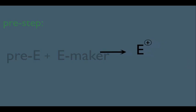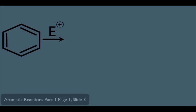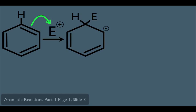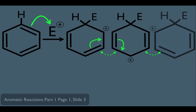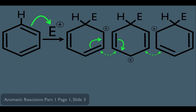After the pre-step, we react the electrophile with benzene or any other aromatic molecule. The first step of the mechanism is that the pi electrons in the benzene ring attack the electrophile, and the electrophile attaches to the ring, creating a carbocation intermediate. This intermediate has resonance — the pi electrons shift to generate three resonance structures. This stability from resonance gives the reaction an incentive to proceed down this pathway.